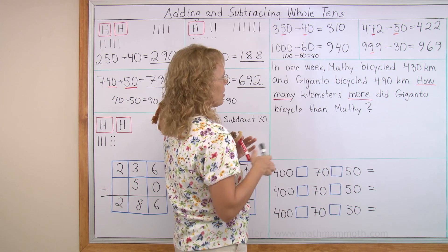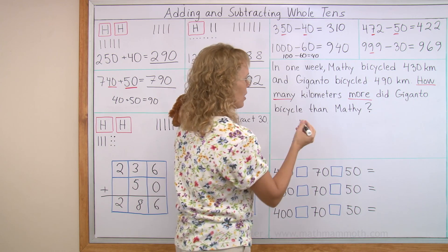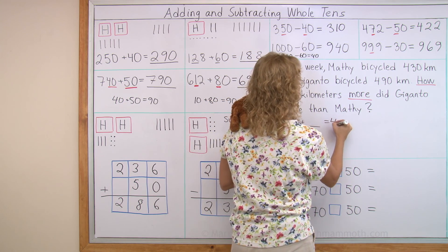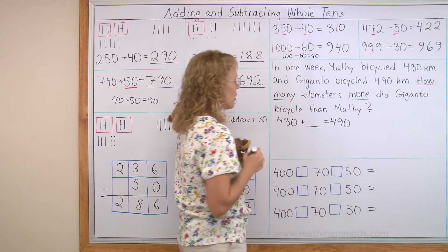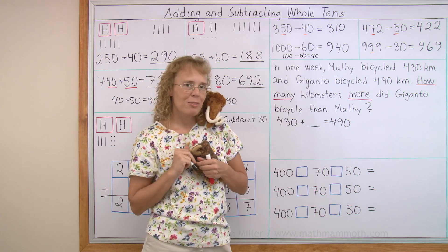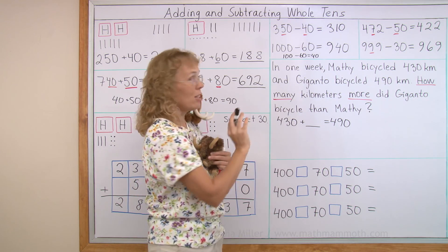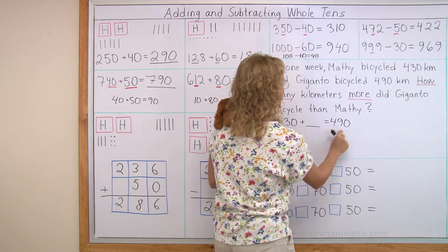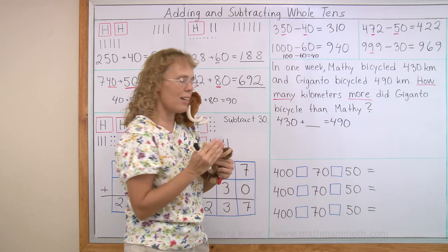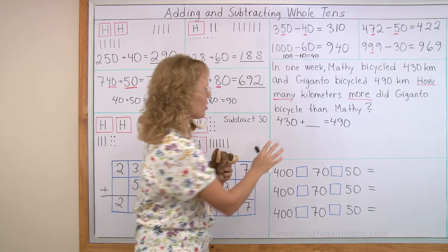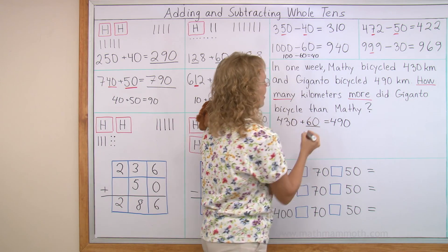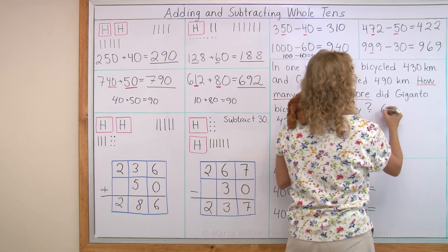And so, if I write how many more addition, then I would think of it this way. 430 plus how many more would make 490? If I think of subtraction, then I would write 490 minus 430. Either way, think of the difference between these two numbers. How far apart are they? There's 30 and 90, right? 400 doesn't change things, so we have 60 here. 60 kilometers more.